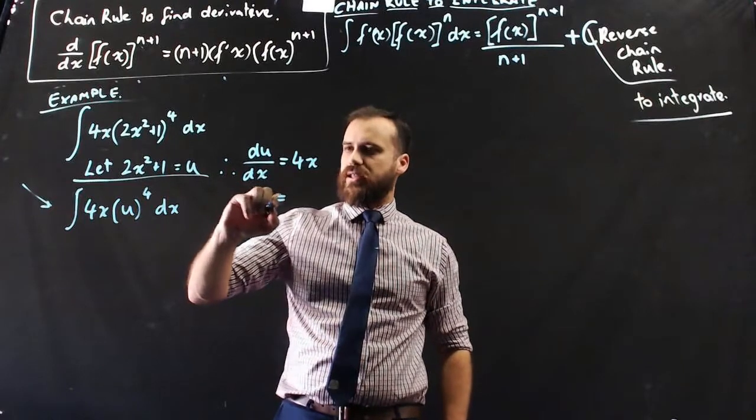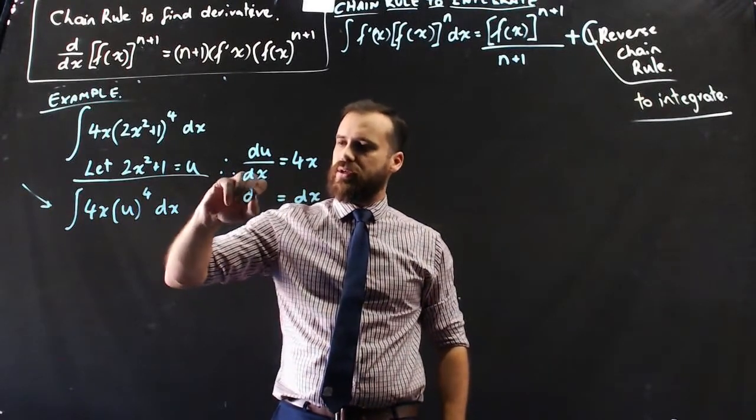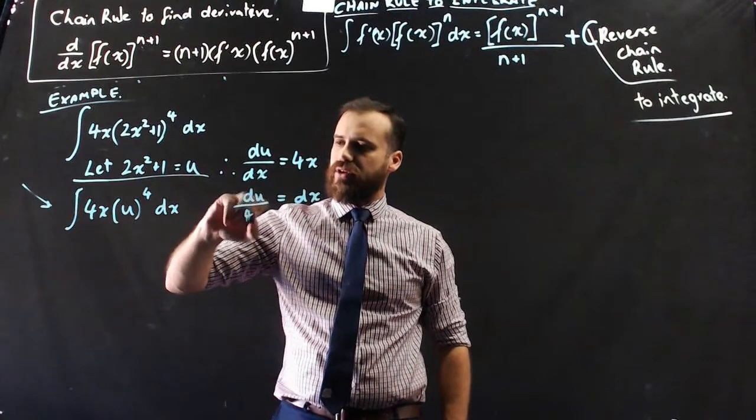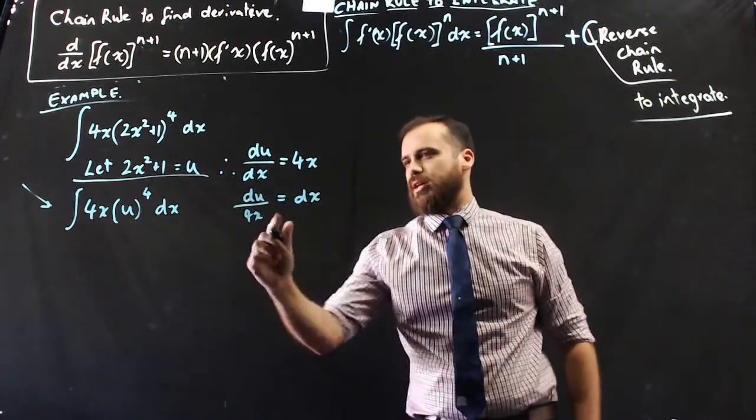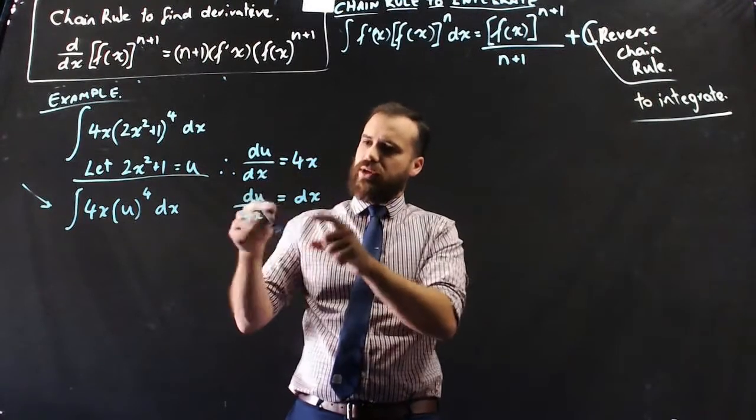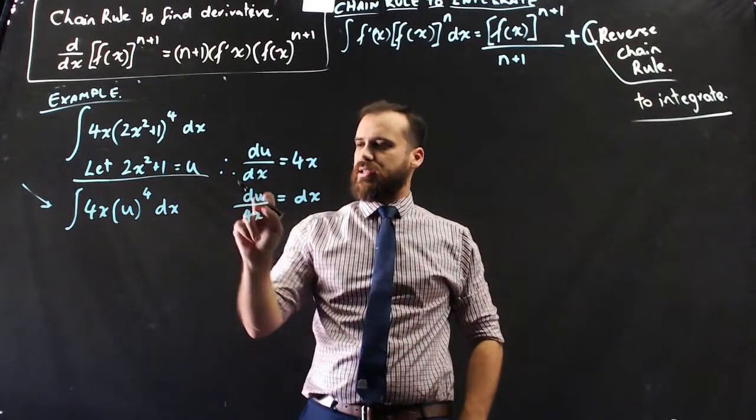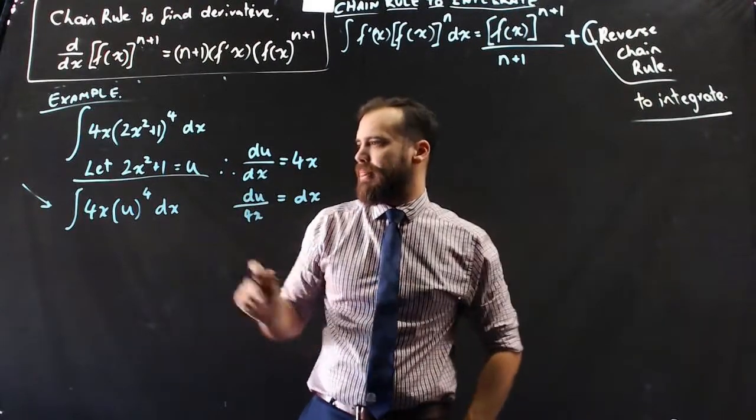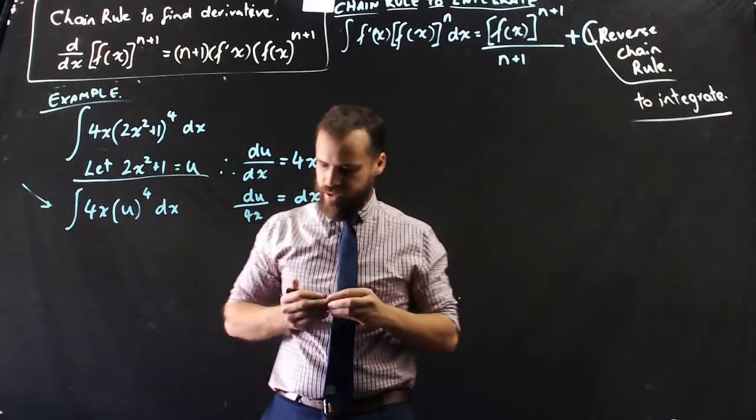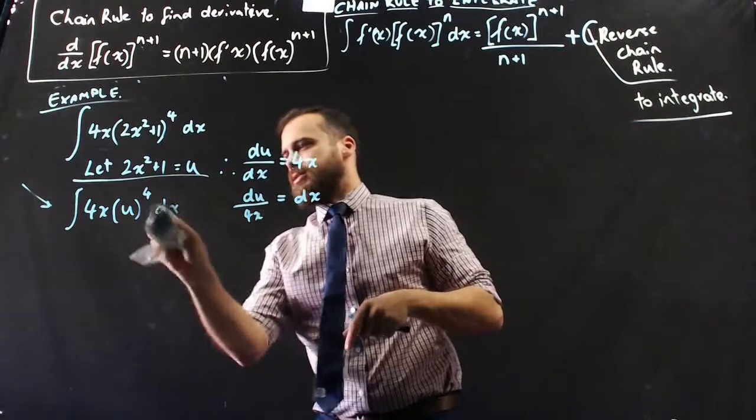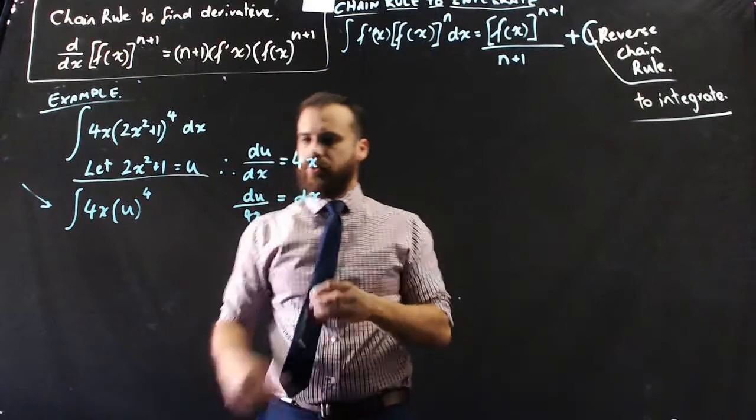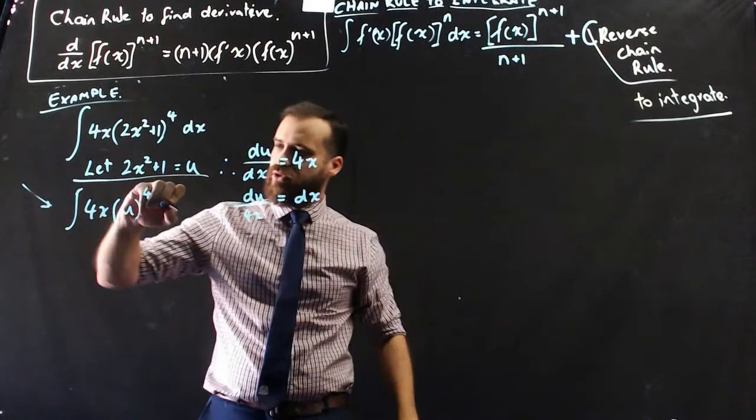I can say that dx equals the derivative of u over 4x. Okay, so I've just cross-multiplied there. So, now I know that dx is equal to du over 4x. Now, what I can do is replace my dx with du over 4x.